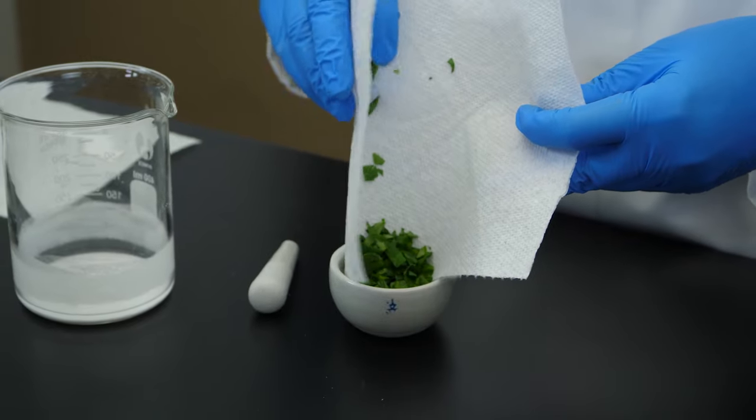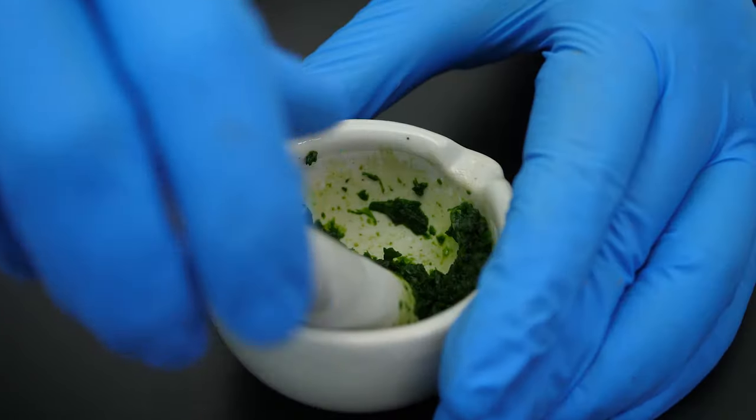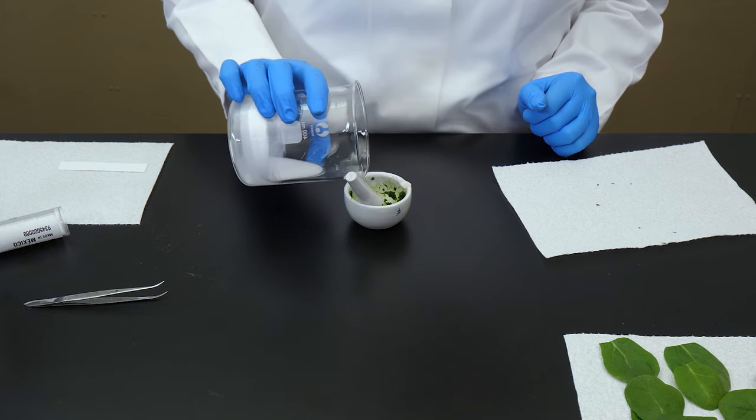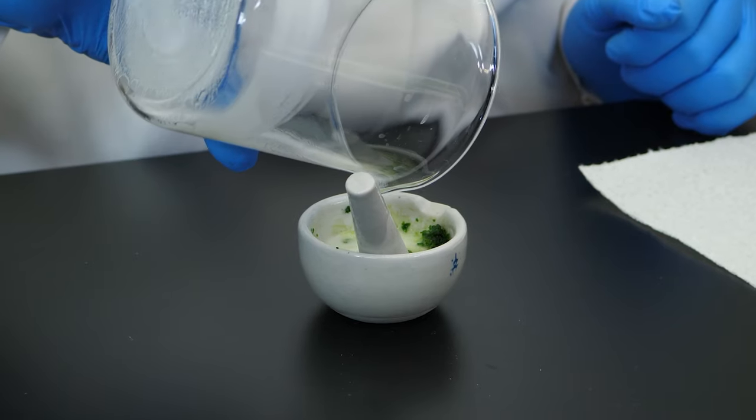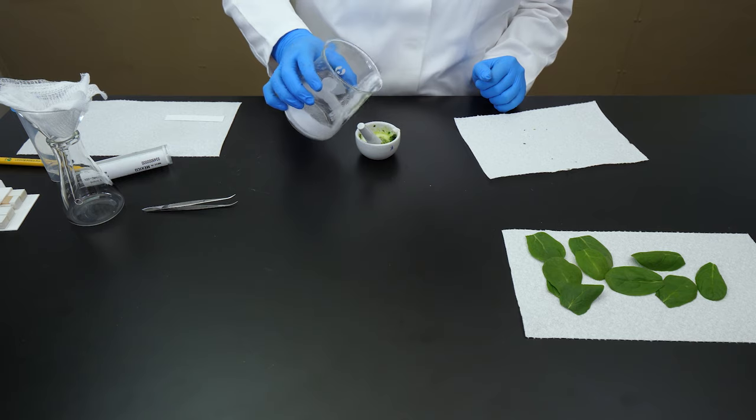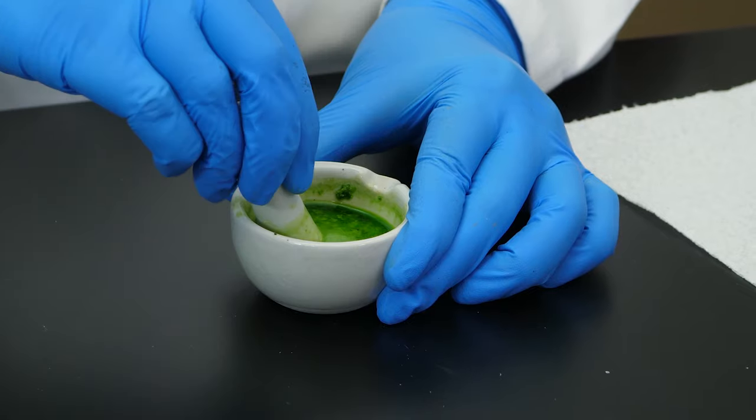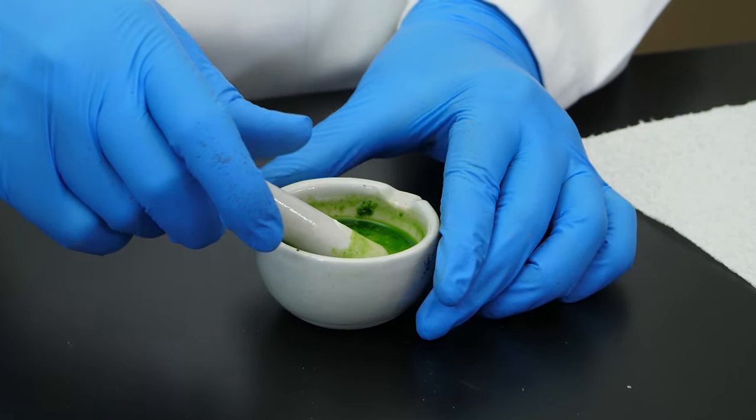Using a mortar and pestle, we smash up some spinach leaves and mix them with a solution of calcium carbonate and acetone to draw the mixture of pigments out of the leaf. Let the contents stand for five minutes.